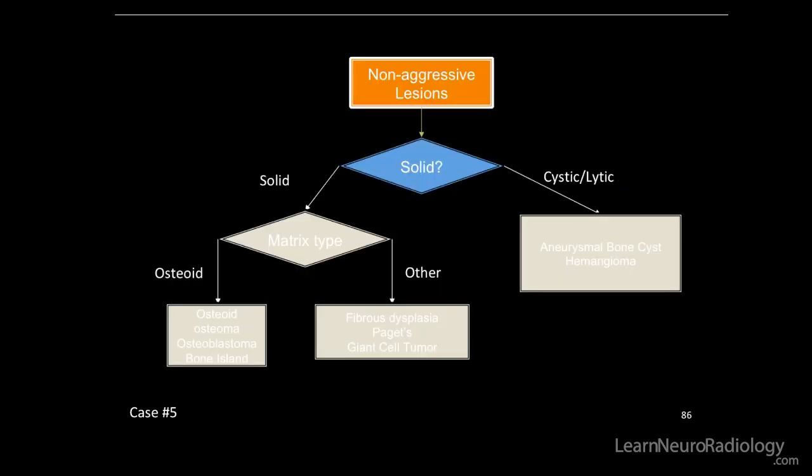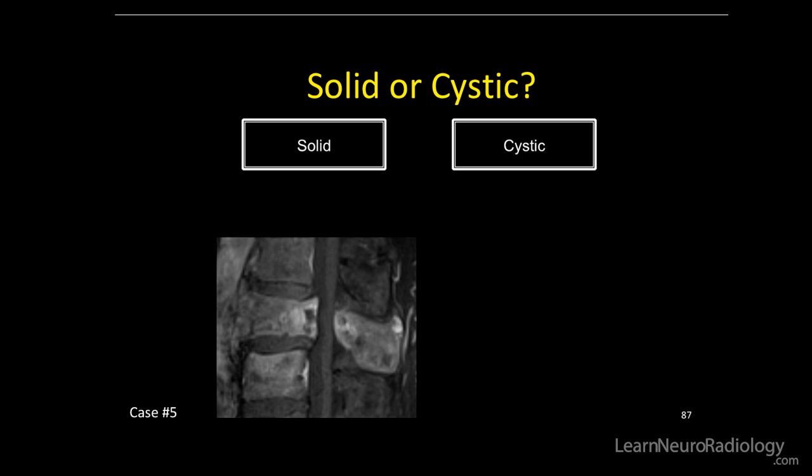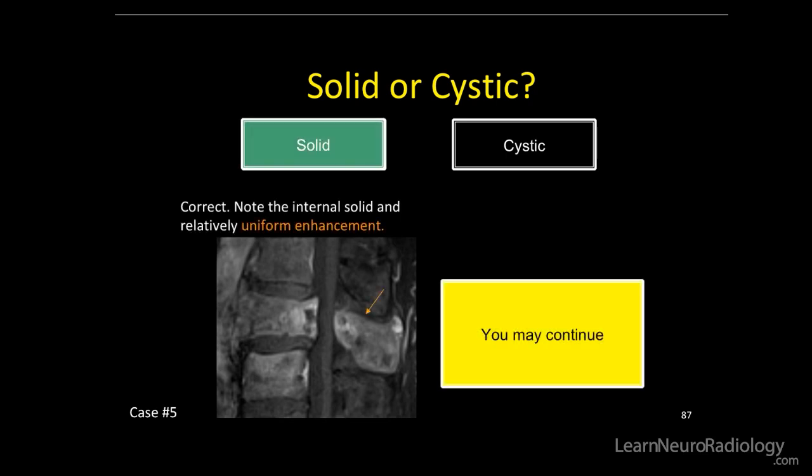We'll use the non-aggressive lesion decision tree. Is it solid or cystic lytic? It had intermediate to dark T2 signal and a lot of solid internal enhancement, so we'll say that it is solid, with pretty uniform internal central enhancement.